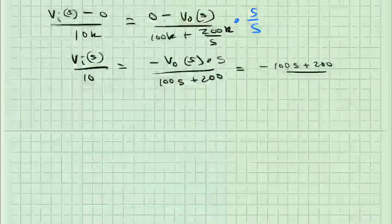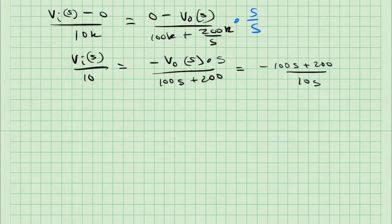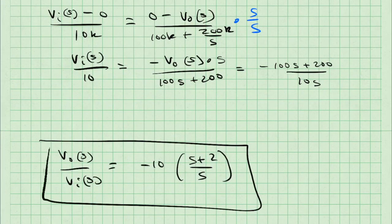If I solve this for V0 of S over VI of S, I'll get negative 100S plus 200 over 10S, which simplifies to become negative 10 multiplied by, in parentheses, S plus 2 over S. And now you've found your second transfer function of a circuit.